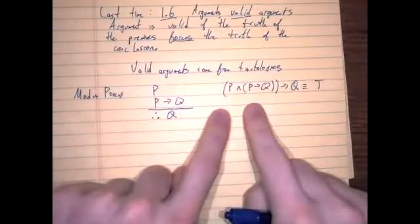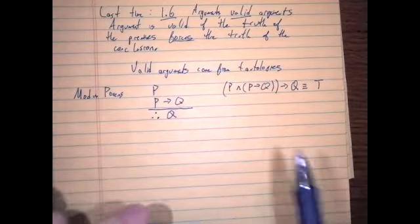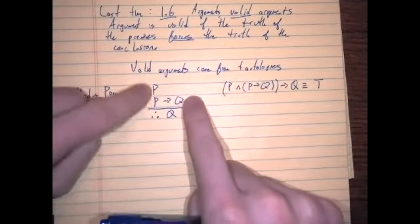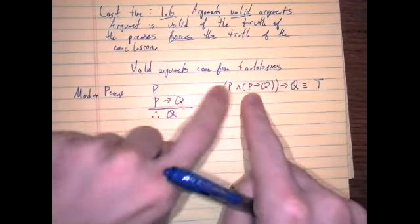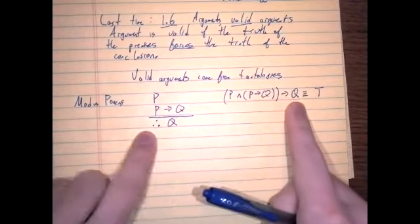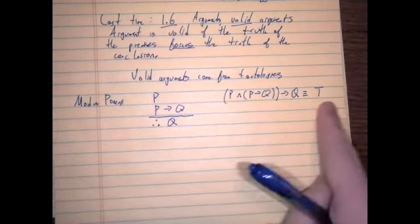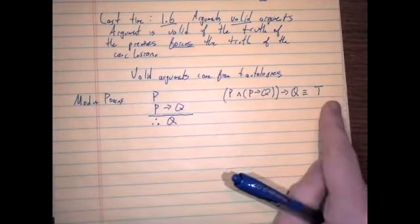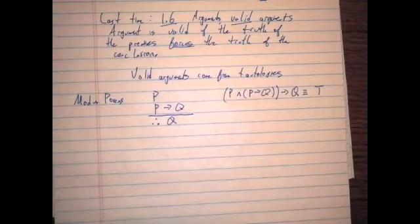You could sort that out using a truth table, or you could check that the proposition p and (p implies q) altogether implies q is a tautology. To go from an argument to the corresponding tautology, you take the conjunction of all premises and then imply the conclusion, and check if this is a tautology. A good way to check is to use the substitution method. So let's check.